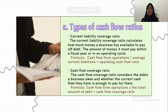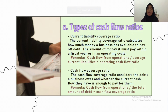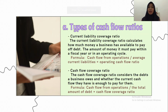The first type is the current liability coverage ratio. This ratio calculates how much money a business has available to pay off its debt within a fiscal year or an operating cycle. A business should have enough money to pay liabilities in full. If after calculating the ratio the result is greater than one, it means the business has enough money to pay off its current liabilities. The formula is: cash flow from operations divided by average current liabilities.